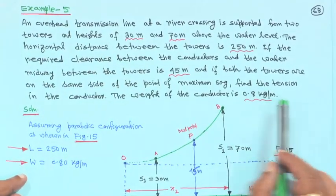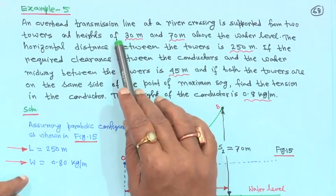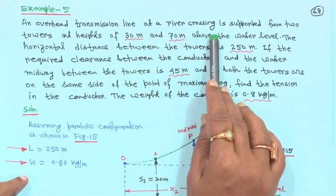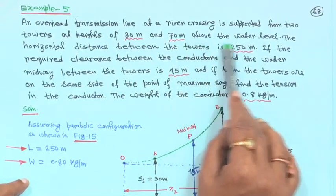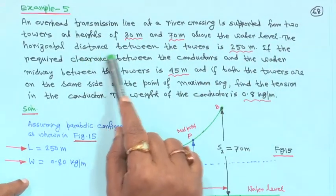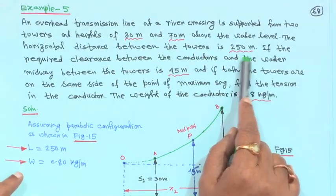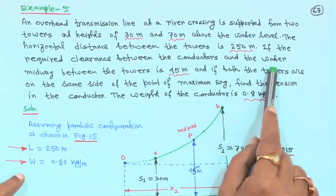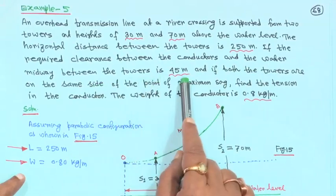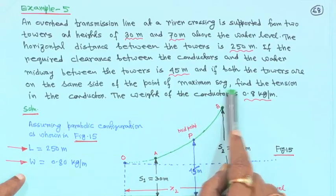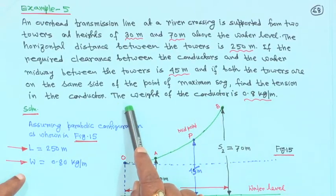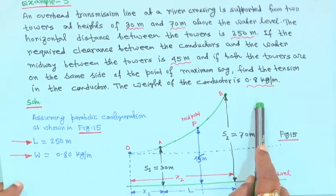So, just now we have seen example 5. Reading the problem once again: an overhead transmission line at a river crossing is supported from 2 towers at heights of 30 meter and 70 meter above the water level. The horizontal distance between the towers is 250 meter. If the required clearance between the conductors and the water midway between the towers is 45 meter, and if both towers are on the same side of the point of maximum sag, find the tension in the conductor. The weight of the conductor is given 0.8 kg per meter.